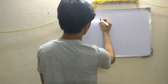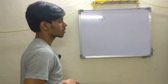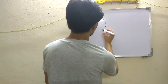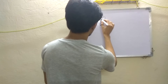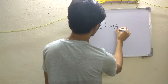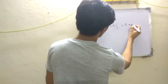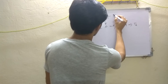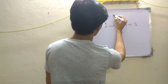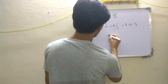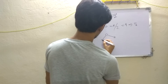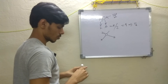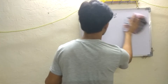Let us verify the formula with H2O. The central atom is oxygen with six electrons, and two hydrogen atoms contribute two electrons, giving a total of eight. Eight divided by two equals four. Four means a tetrahedral structure, and the hybridization is sp3.